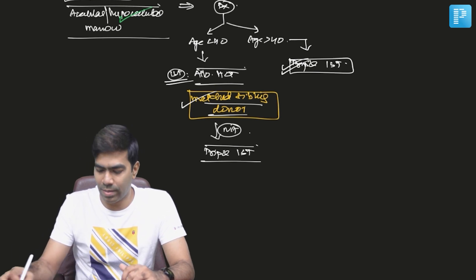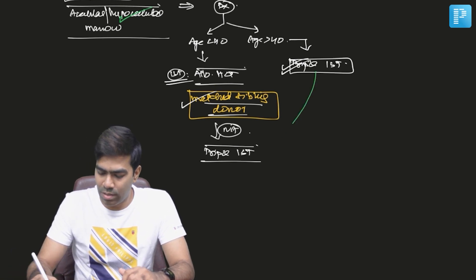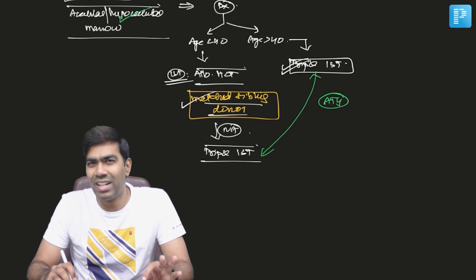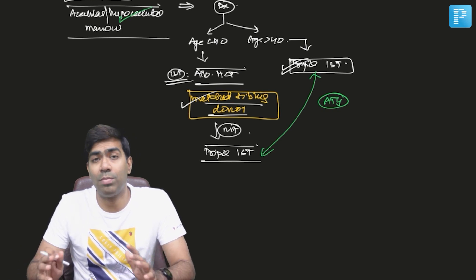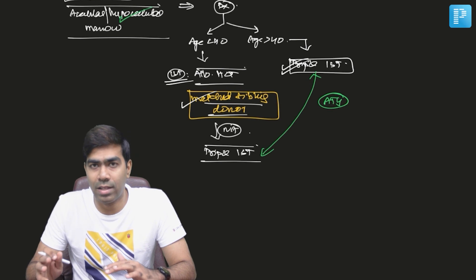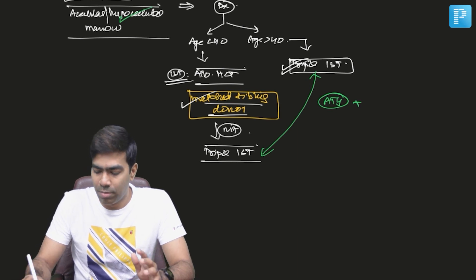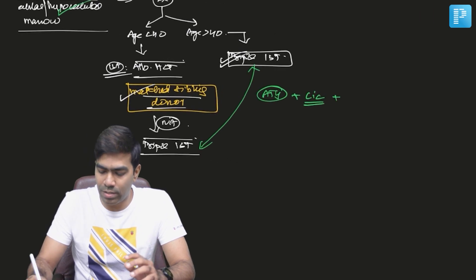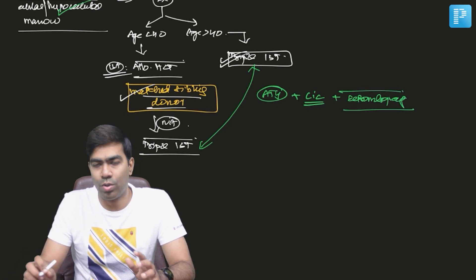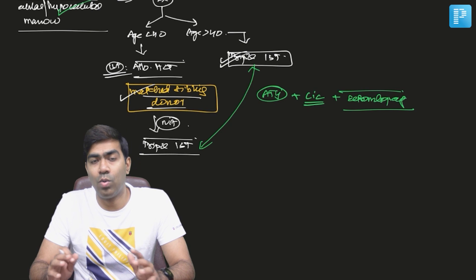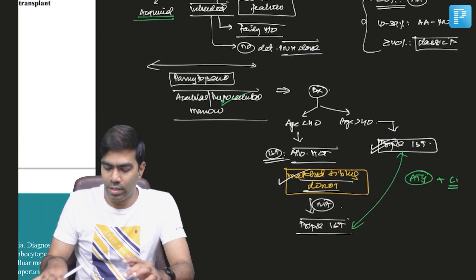So what do you mean by the term triple immunosuppressive therapy? It contains antithymocyte globulin. Generally horse ATG is considered to be better than that of the rabbit antithymocyte globulin. So horse ATG plus a calcineurin inhibitor, typically cyclosporine, plus you can also add eltrombopag. Technically it is not an immunosuppressive agent but addition of eltrombopag has shown some durable responses and good results in a lot of trials. So that is why this is going to be